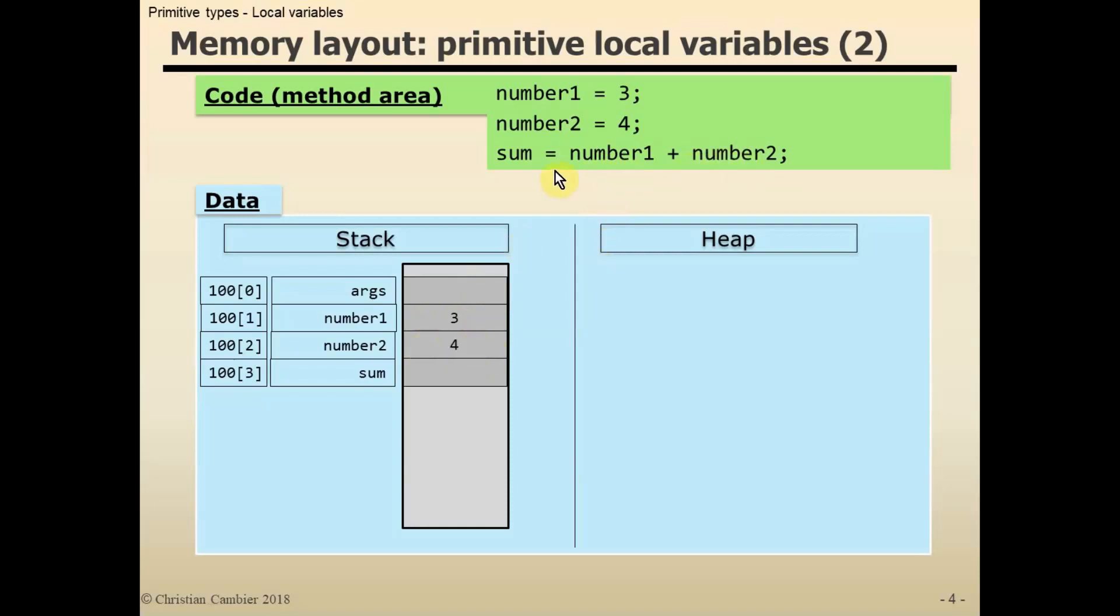We assign the result of 7 to the location in memory where sum is. This results in the following. If we would print out the content of sum, the result will be 7. Okay, this is for my first demo. Bye-bye.